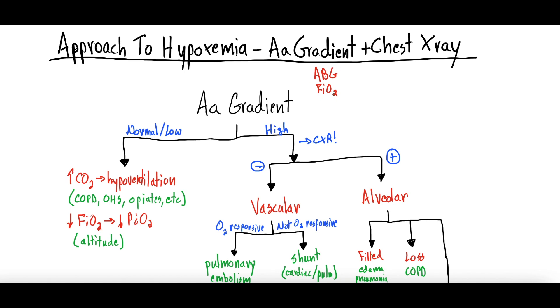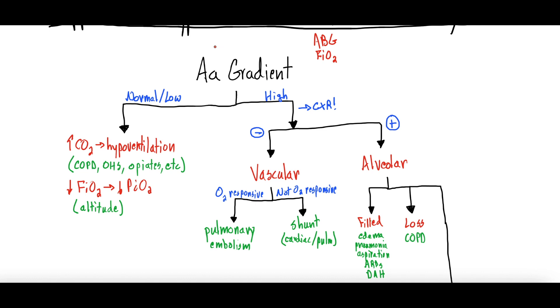For the A-a gradient all you need is an arterial blood gas, an ABG, and then you need to know how much supplemental oxygen they're on and then a chest x-ray. So approach to hypoxemia using an ABG, the amount of oxygen they're on, and a chest x-ray. To start, you'd calculate their A-a gradient. We went over the equation for this in the other video: partial pressure of alveolar oxygen minus the partial pressure of arterial oxygen, which is a calculation that is easy to do just using these two variables. Then you get either a normal or low A-a gradient or a high A-a gradient.